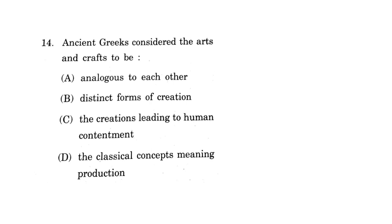Moving on to the next question: ancient Greeks considered the arts and crafts to be — options were: analogous to each other, distinct forms of creation, the creation leading to human contentment, and the classical concept meaning the production. If you read the passage, the Greeks were of the opinion that it is a classical concept which can be used for production. Based on the production and the beauty of crafts and art, they said it can be divided whether it is craft or art. So the correct answer is D: the classical concept meaning the production.